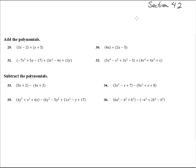Alright, section 4.2, we're going to do numbers 29 through 36. Here it says add the polynomials. Adding polynomials — that's just combining like terms.